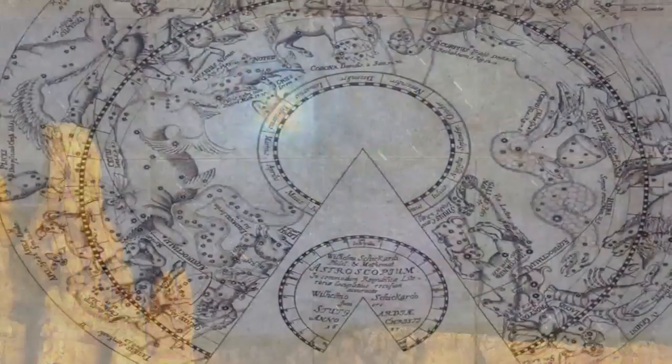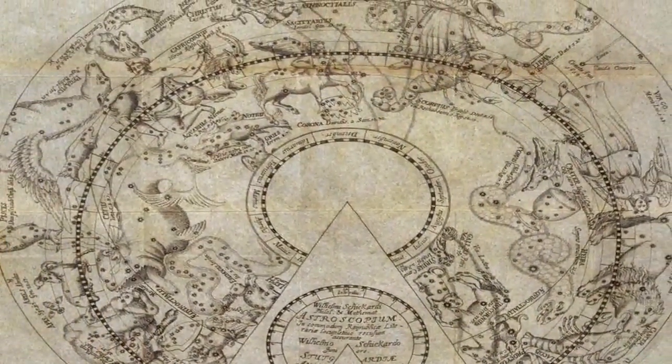Anyone can tell by looking up at night that there are vast numbers of stars, but ancient astronomers would be astonished to learn just how many there are.